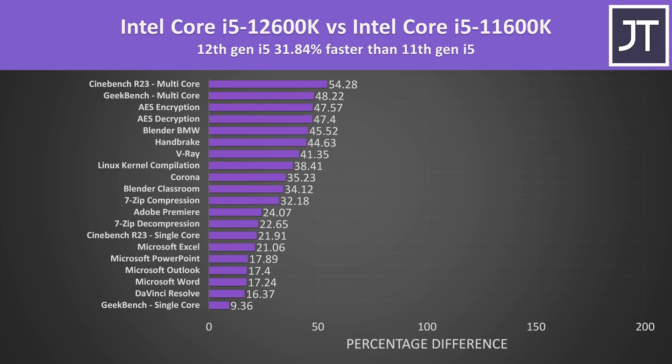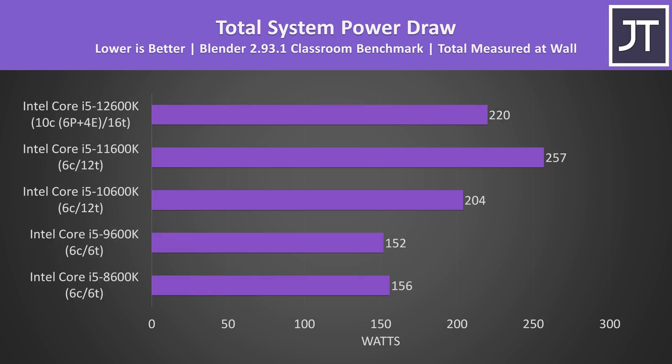Despite performing the best, in Blender 12th gen wasn't drawing as much power from the wall compared to 11th gen. Measuring total system power draw from the wall — with component changes between 11th and 12th gen including motherboard and RAM — the fact that 12th gen isn't using more power than 11th gen while completing the Blender task 34% faster really drives home how much of an improvement Alder Lake is, or how poor Rocket Lake was — take your pick.